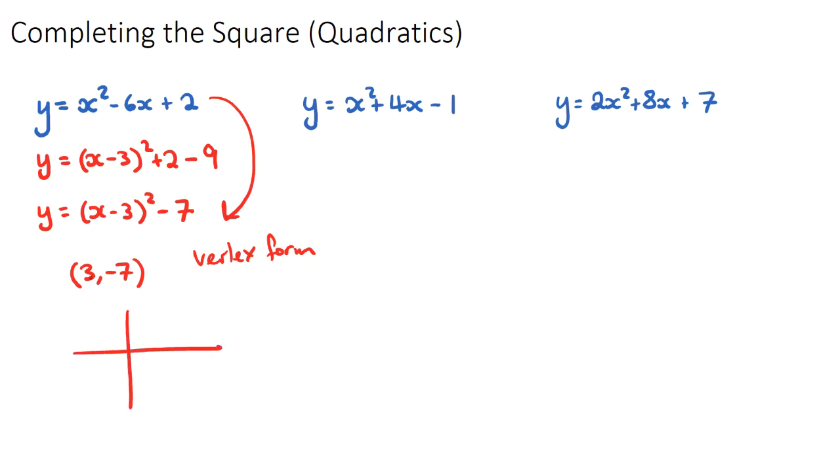And graphically, if I were to sketch this, the vertex would be at three, negative seven. It would look something like this, three, negative seven. And the reason why this is useful is because in IB exam questions, they often give you a quadratic in the general form, and they want you to sketch it and sketch where the vertex is. So we need to complete the square.